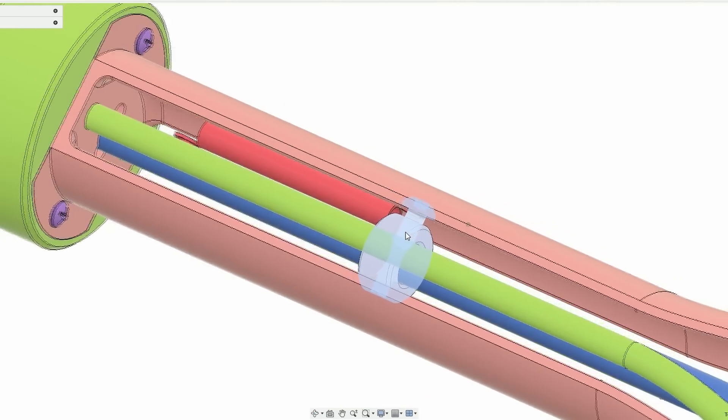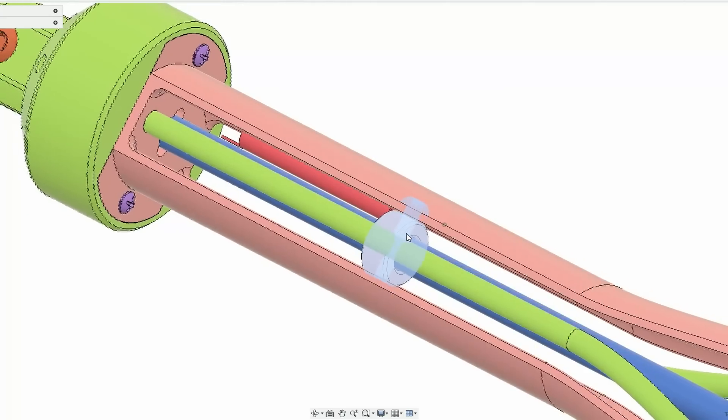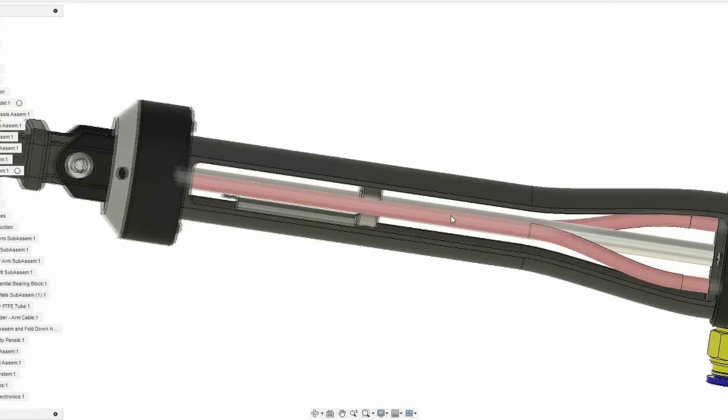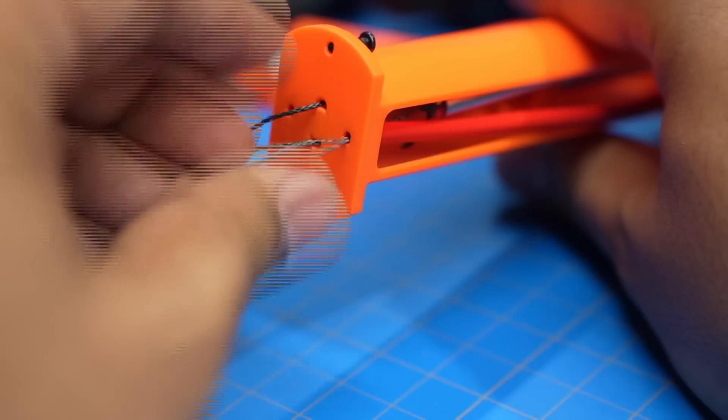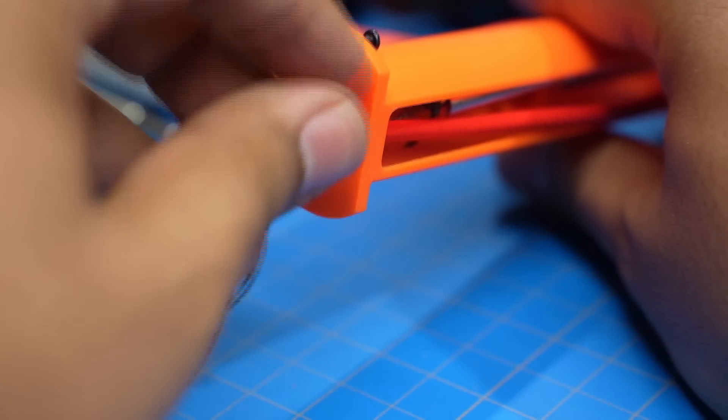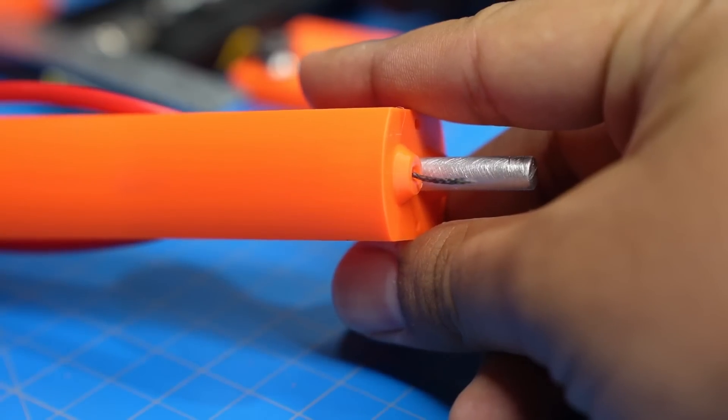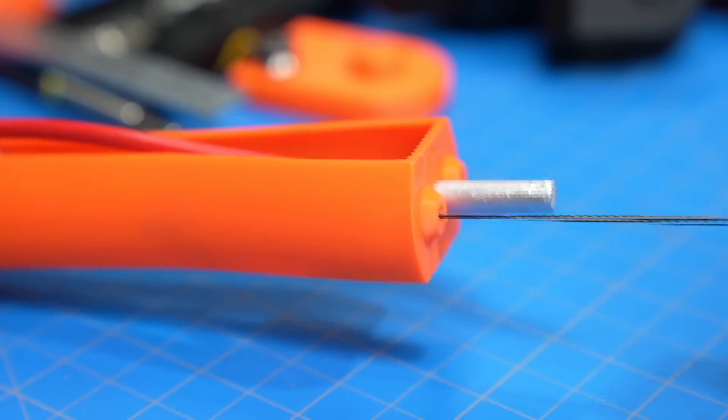But now that the core of the forearm isn't a tube, I need a place to route the hand and wrist control cables, and I've got the perfect option. Claptrap has these random red wires in his forearm, which previously would have just been decorative. But I designed my version with red PTFE tubes, so now the cables can be neatly routed through the forearm and into the elbow.